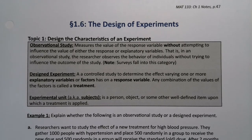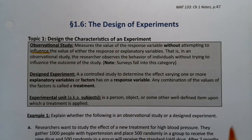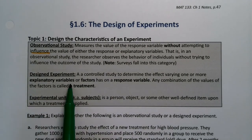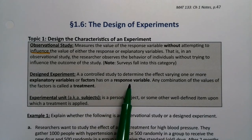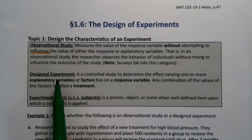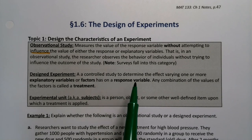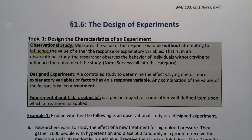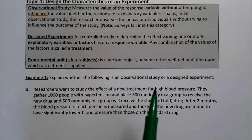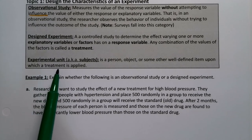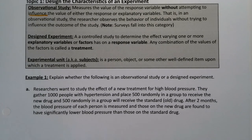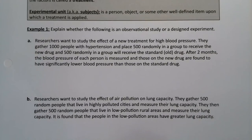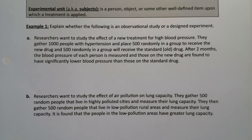Whereas in a designed experiment, it's a controlled study to determine the effect of varying one or more explanatory variables, also known as factors, on the response variables. So if you manipulate this explanatory variable on purpose, what happens to that response variable? Any combination of the values of the factors is called a treatment. Experimental units are the people or subjects in the experiment to which the treatment is applied.